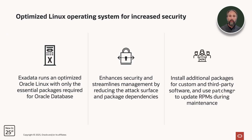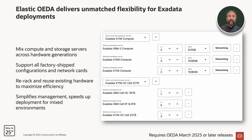Exadata runs an optimized Oracle Linux operating system with only the most essential packages required for Oracle Database installed. This enhances security and streamlines management by reducing the attack surface and package dependencies. You can install additional packages for custom and third-party software, and use PatchManager to update RPMs during maintenance — a feature released with Exadata System Software 25.1. The Elastic Oracle Exadata Deployment Assistant, OEDA, delivers unmatched flexibility for Exadata deployments and enables you to mix compute and storage servers easily across multiple hardware generations. It supports all factory ship configurations and network cards, and eases re-racking and reuse of existing hardware to maximize deployment efficiency, simplifying management and speeding up deployment for mixed environments.